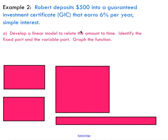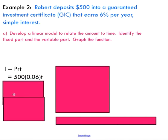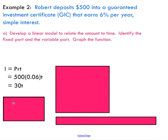One final example: a man deposits $500 into a GIC that earns 6% per year of simple interest. We're asked to develop a linear model to relate amount to time — to see how his amount of money changes over time. Remember that interest equals principal times rate times time. We're given all of that information except time, so filling in what we have and expressing the percentage as a decimal, we get I = 30T.